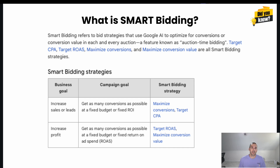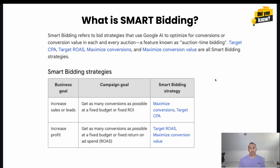Both target return on ad spend and target CPA are smart bidding options. Smart bidding refers to bid strategies that use Google's AI to optimize for conversions or conversion value in each and every auction — a feature known as auction-time bidding. I used to be all on the manual bidding train and avoided smart bidding, but over the past five years Google Ads has gotten a lot better with their AI at understanding who your potential customer is.